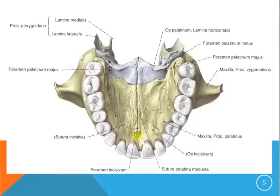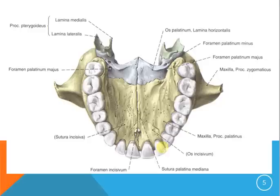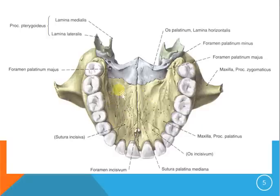This is the foramen incisivum where the canalis incisivus ends. This is the sutura palatina media. The upper teeth, as I said: six molars, four premolars, two canines, two lateral incisors, and two central incisors. This is the foramen palatinum majus, and here — not written in the picture — is the foramen palatinum minus. Through these foramina the palatine artery and vein pass and supply the hard palate formed by the maxilla.